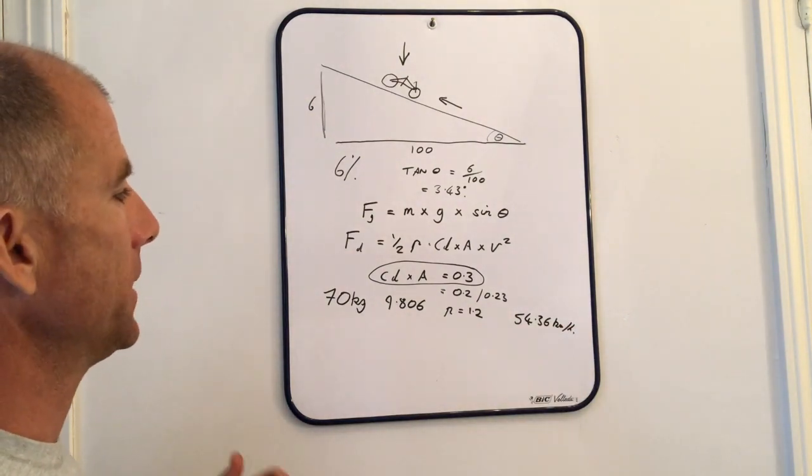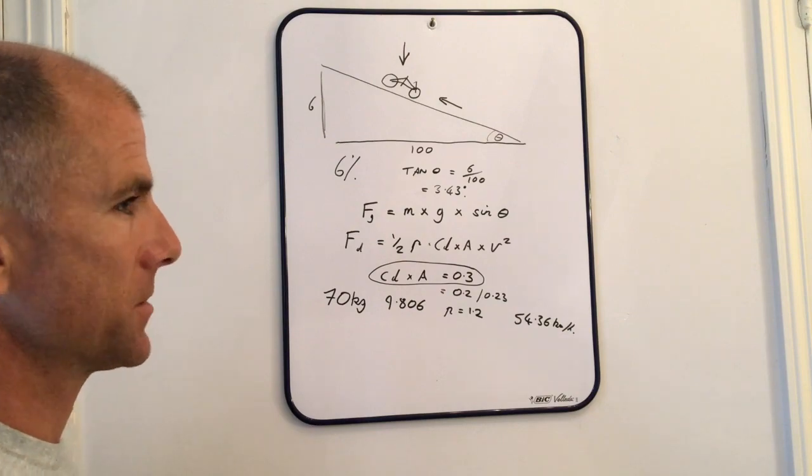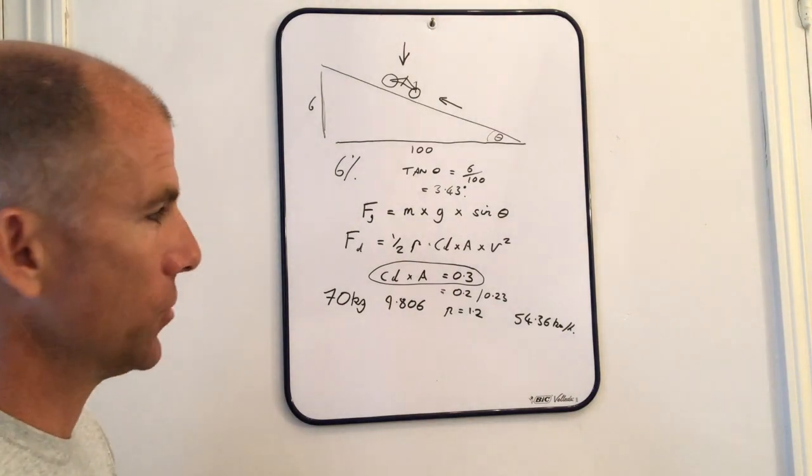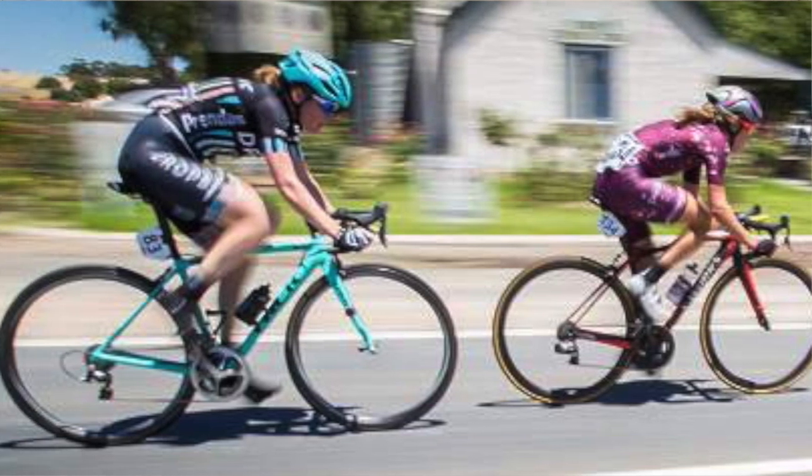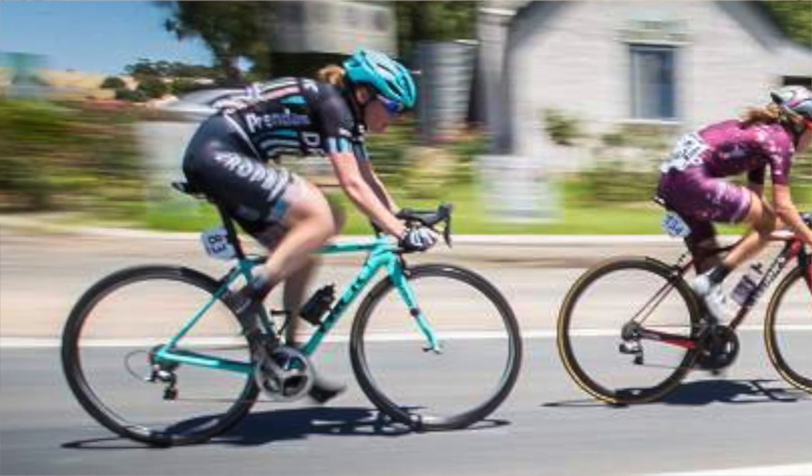Which is kind of about right if you think about it. If you're freewheeling down a 6% slope in a fairly aero position on the drops, and you're taking away any rolling resistance, then that's roughly the kind of speed you would expect.